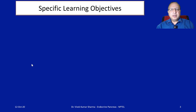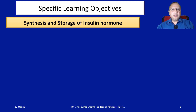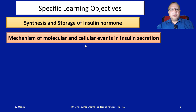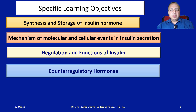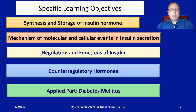The specific learning objectives of this lecture are that by the end of this chapter we should be able to understand: the synthesis and storage of insulin hormone, mechanism of molecular and cellular events in insulin secretion, regulation and functions of insulin, counter-regulatory hormones, and the applied part — that is, diabetes mellitus.